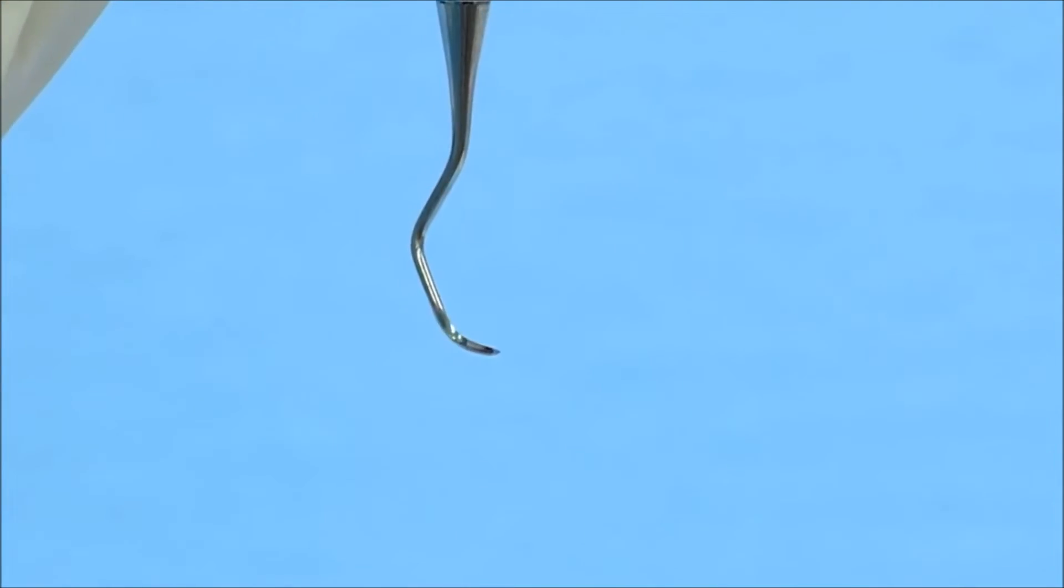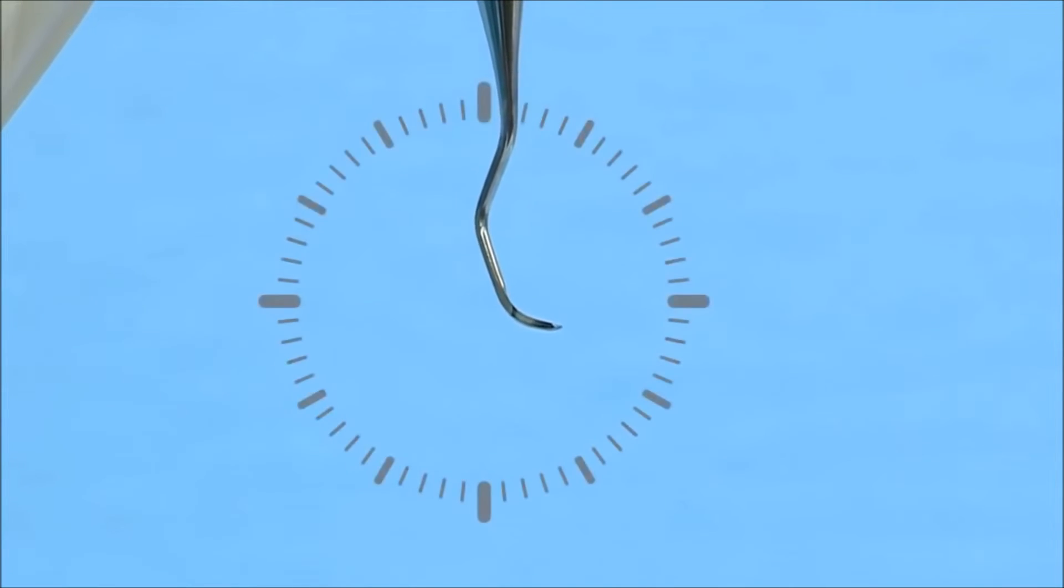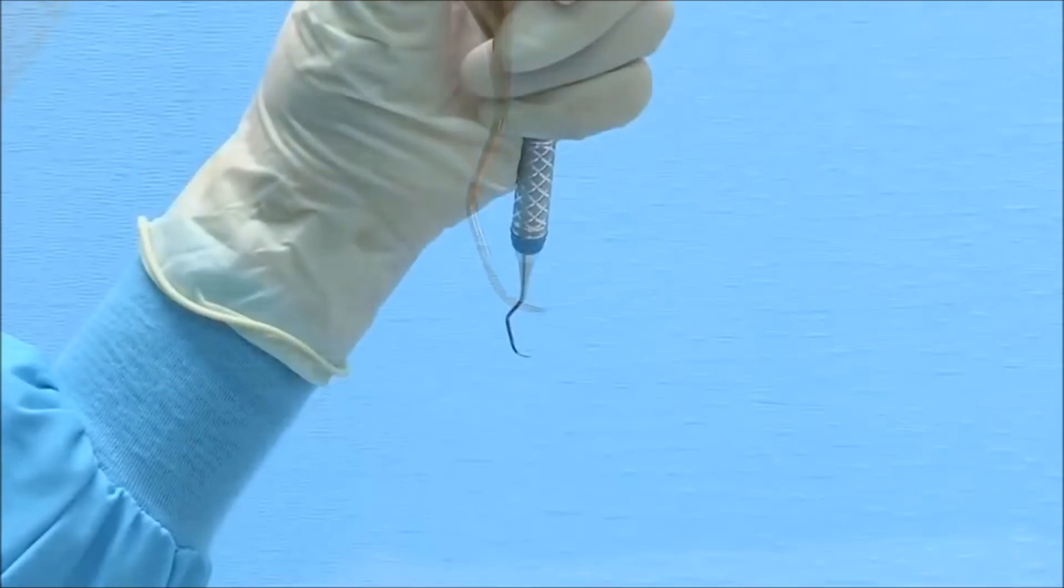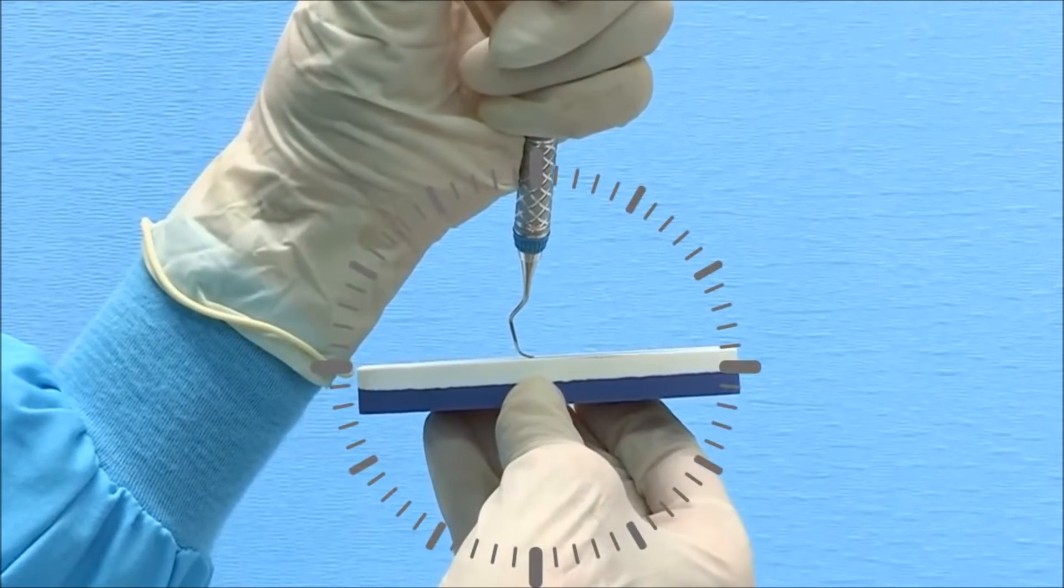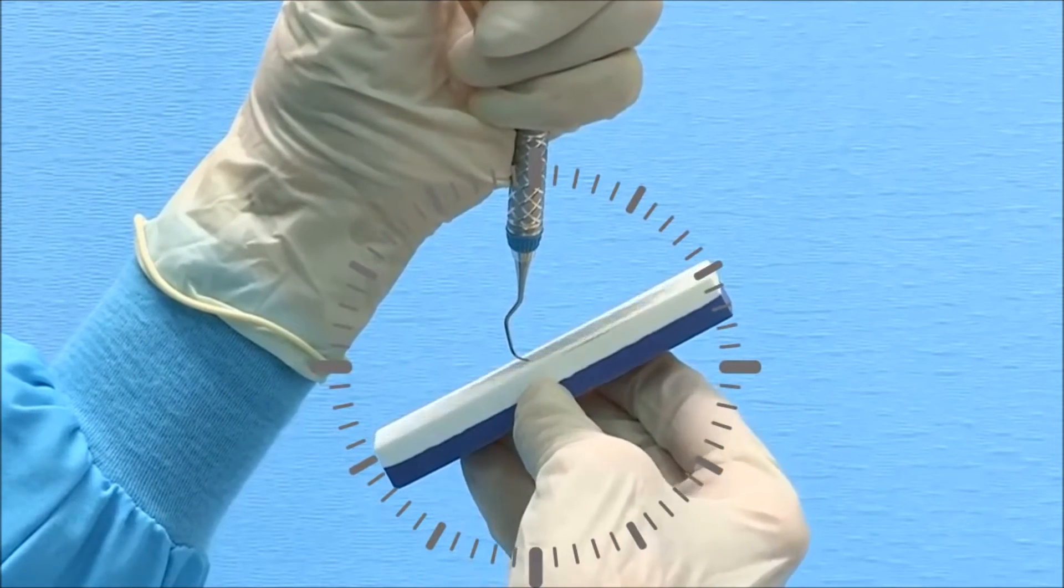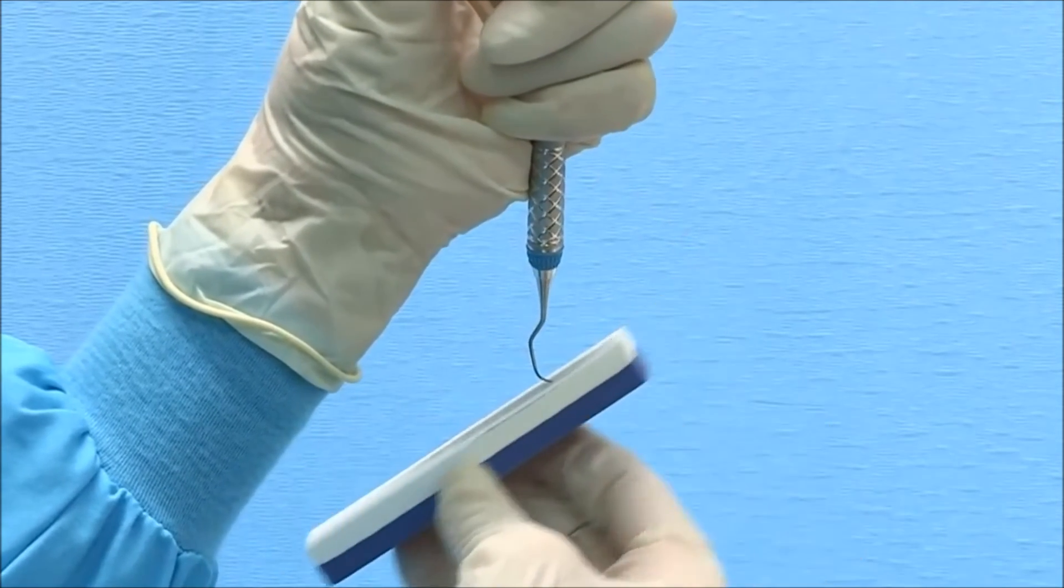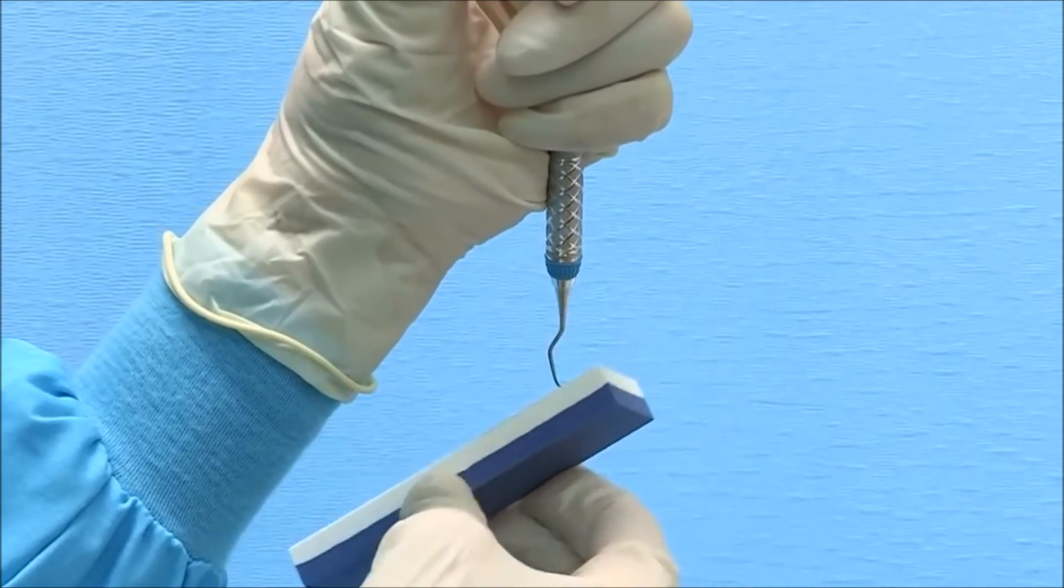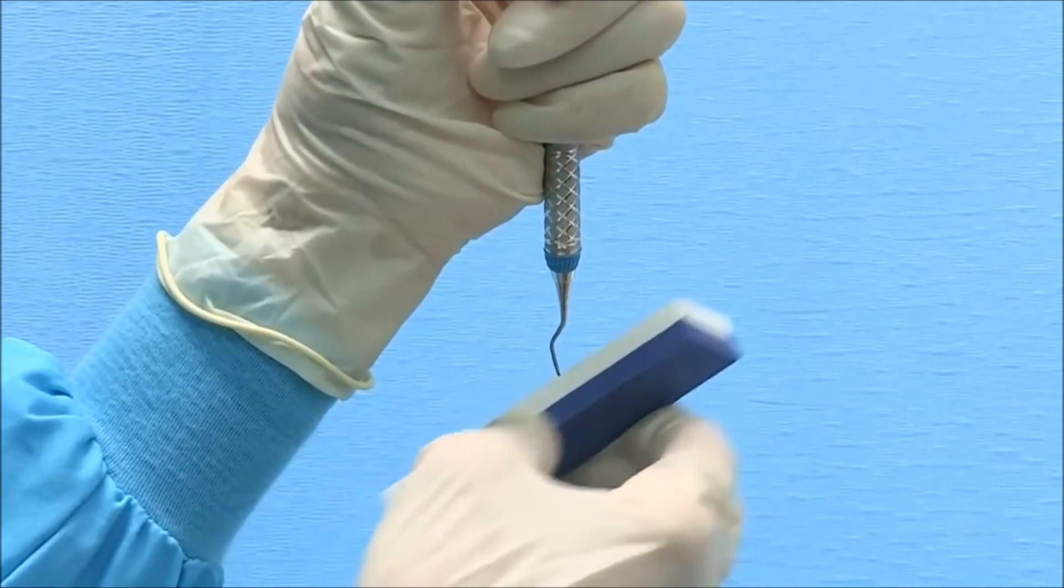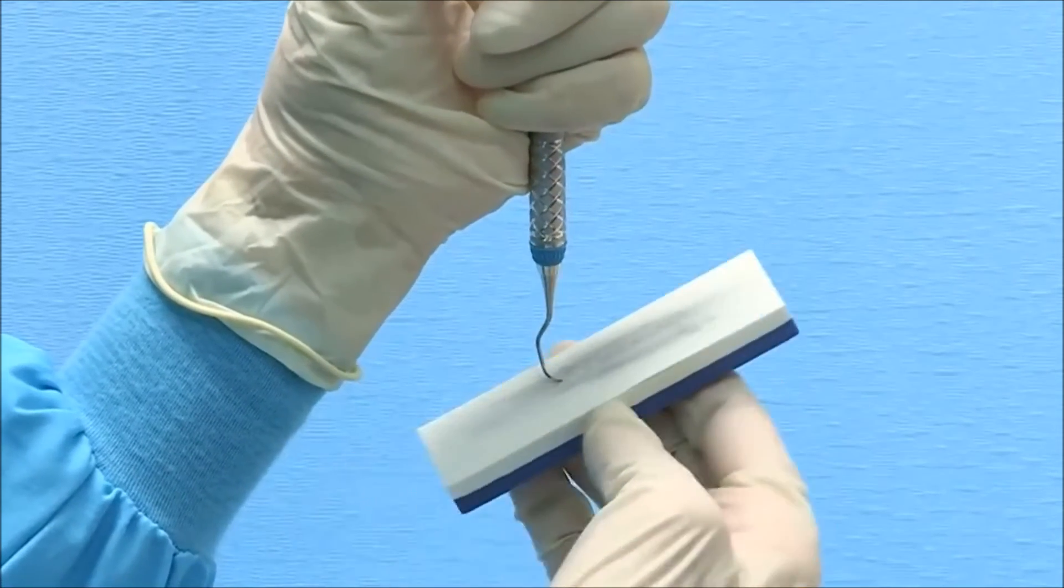To maintain the rounded shape of the curette toe, rotate the instrument handle so that the toe is pointed at 3 o'clock. Position the stone underneath the blade at 3 o'clock and tilt upward toward the 2 o'clock position. Move the stone in a consistent up and down motion, overlapping strokes and rotating around the toe to maintain the rounded shape.